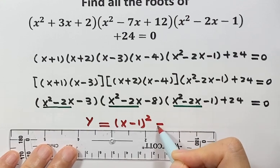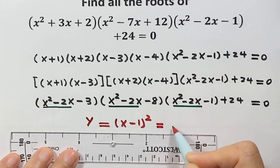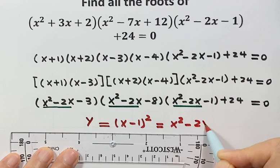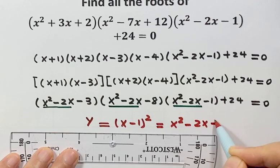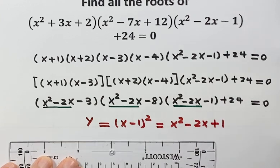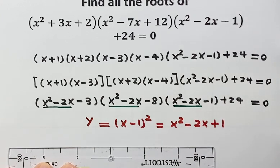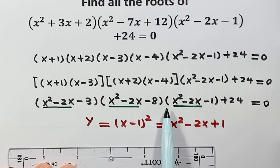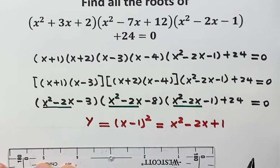We are going to let y equal x minus 1 squared. And x minus 1 squared is just x squared minus 2x plus 1. Next we are going to use y to rewrite the equation — write the equation in terms of y.